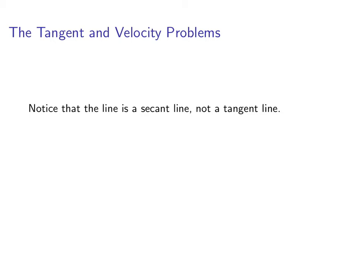Let's calculate the slope of that secant line. So the slope, we use the same formula y2 minus y1 over x2 minus x1 and we get x squared minus 1 over x minus 1.